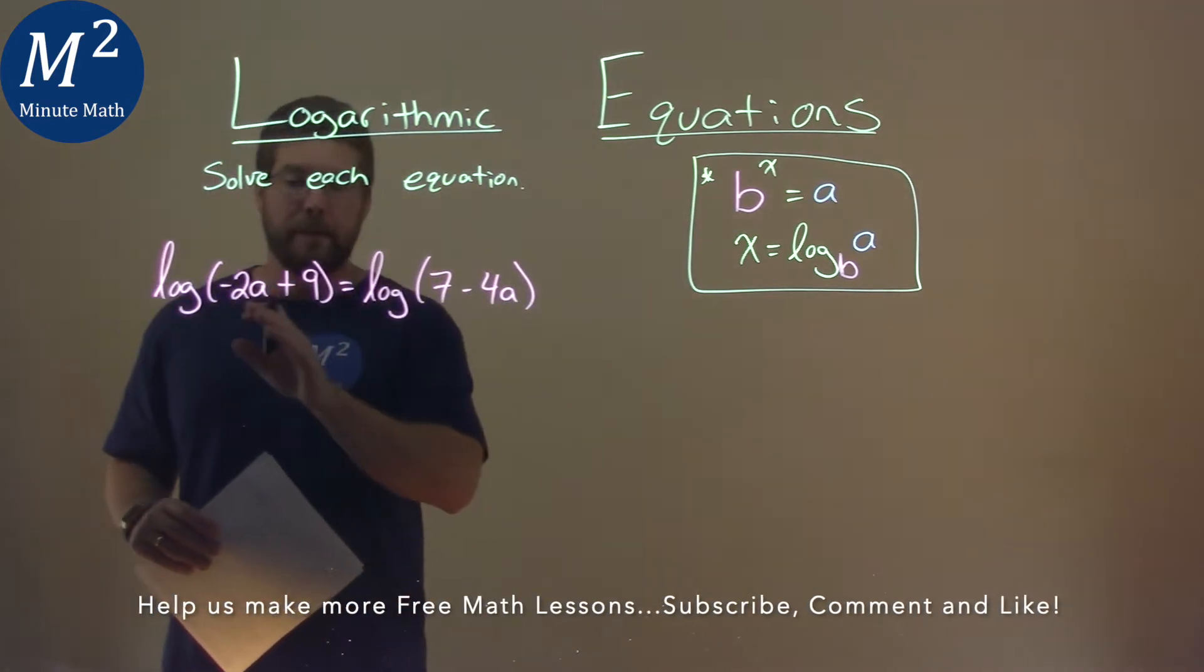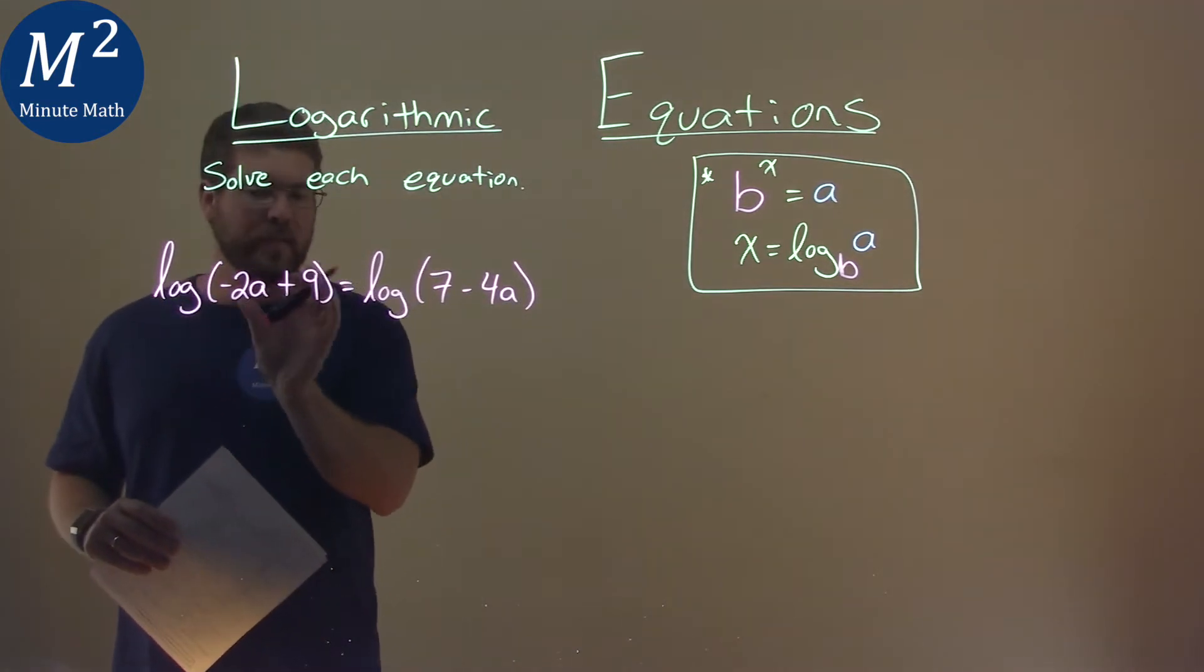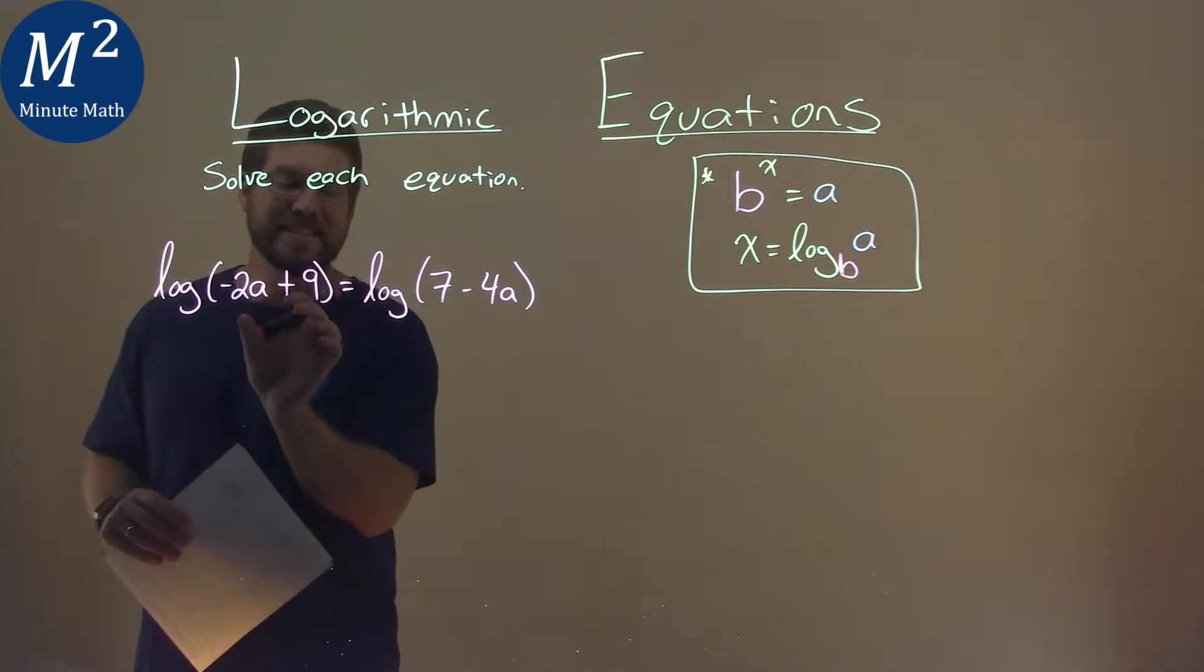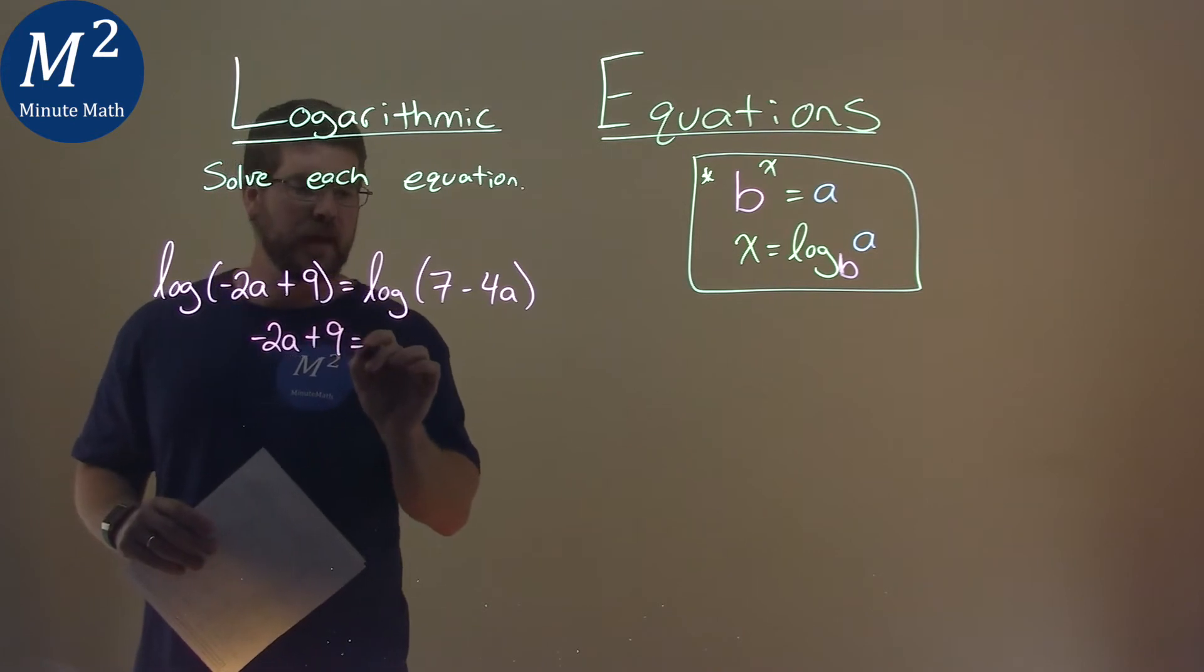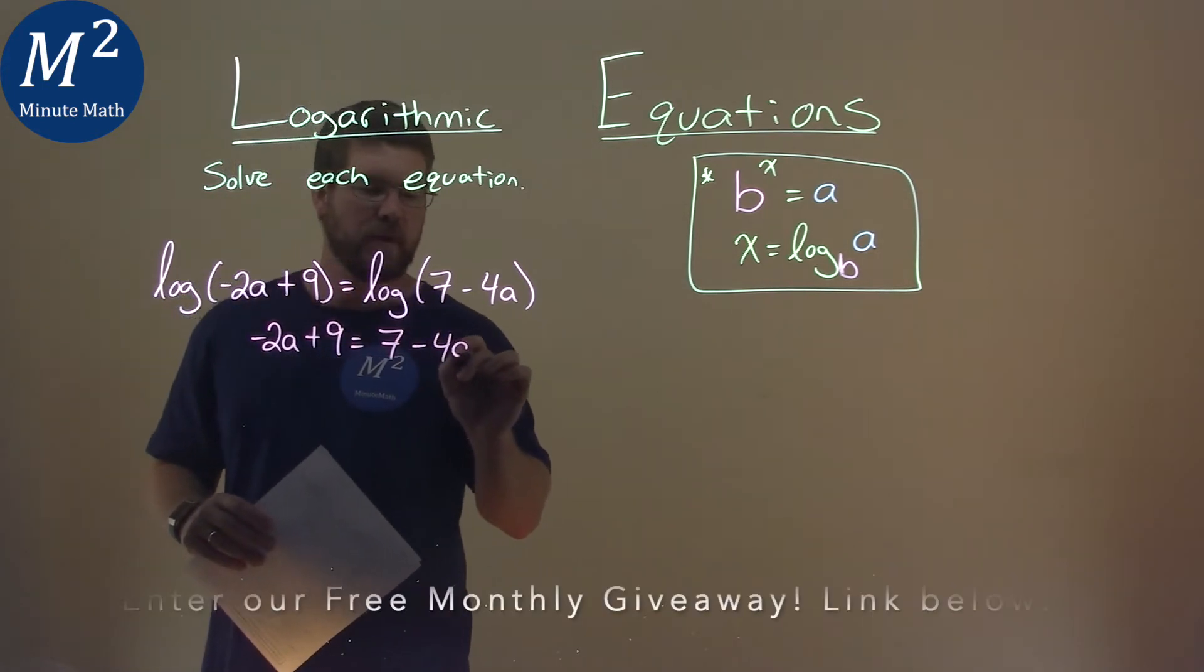Since these logs have the same base, we can now look at the inside parts, and we just can set them each equal to each other. Negative 2a plus 9 equals 7 minus 4a.